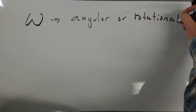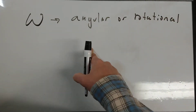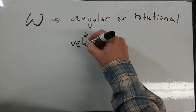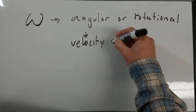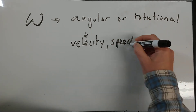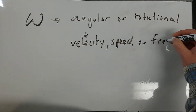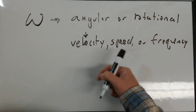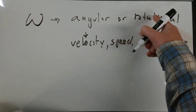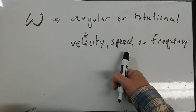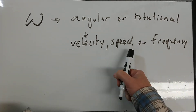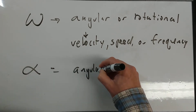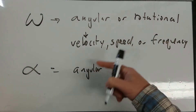Some people call it angular, some people call it rotational — it's velocity, speed, or frequency. So it can be angular velocity, angular speed, angular frequency, or rotational velocity, rotational speed, or rotational frequency. It's a little confusing, but it is what it is. Alpha is our angular acceleration, or rotational acceleration.